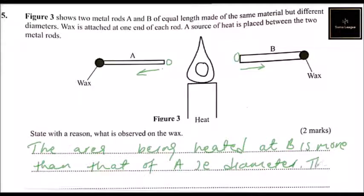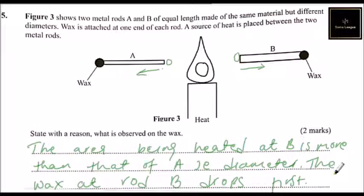The wax at rod B drops fast. So that is how you answer that question.